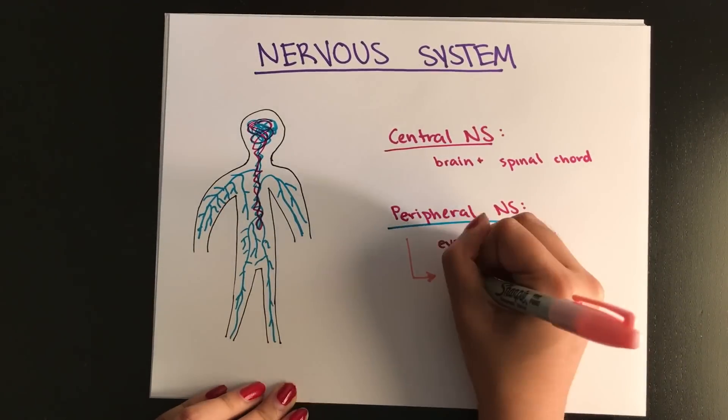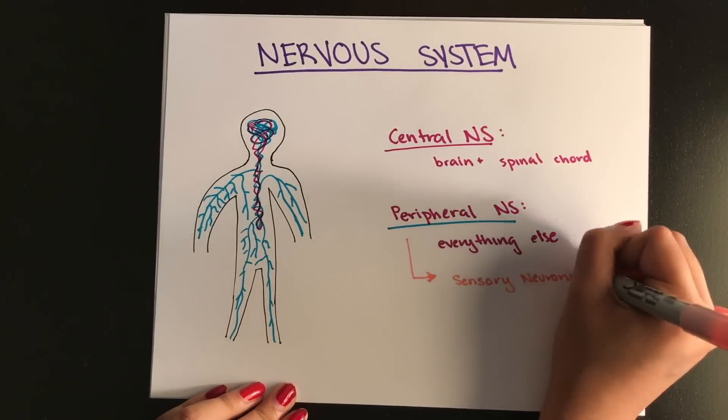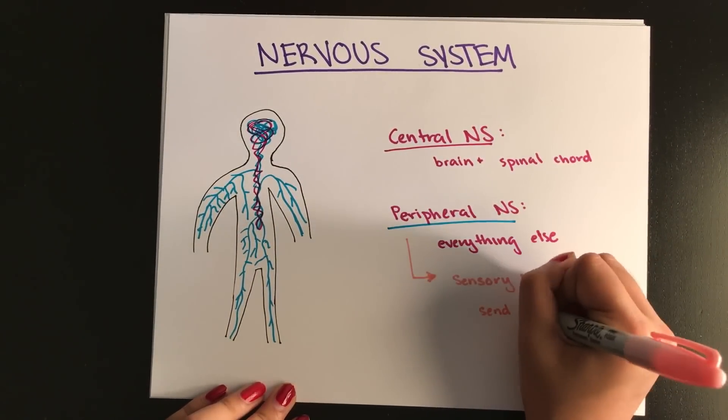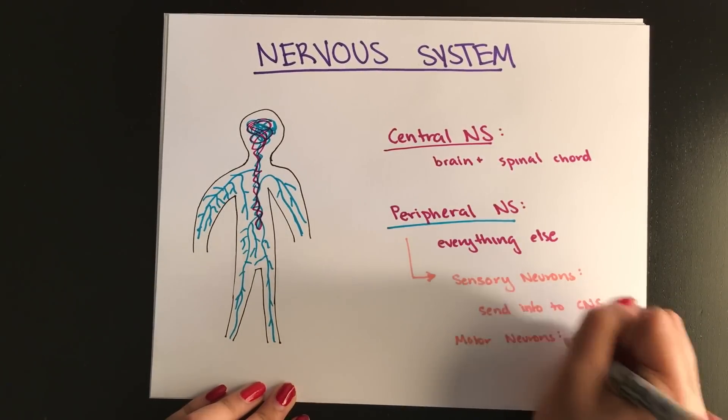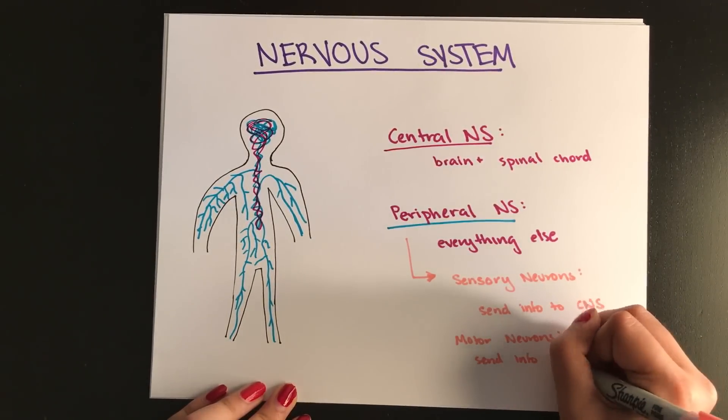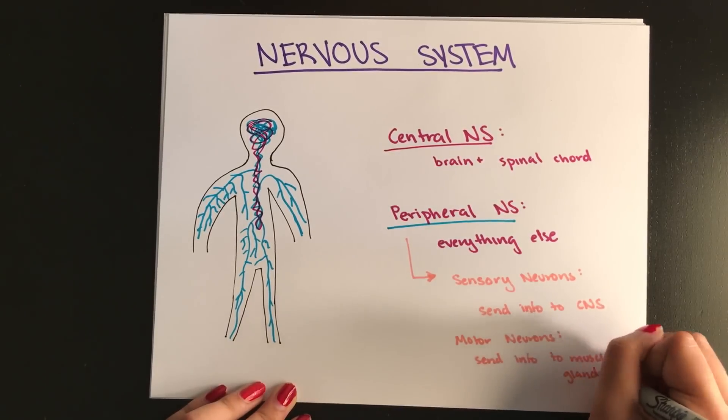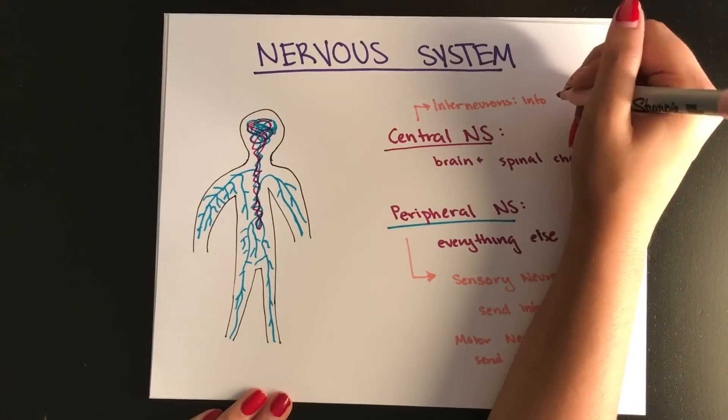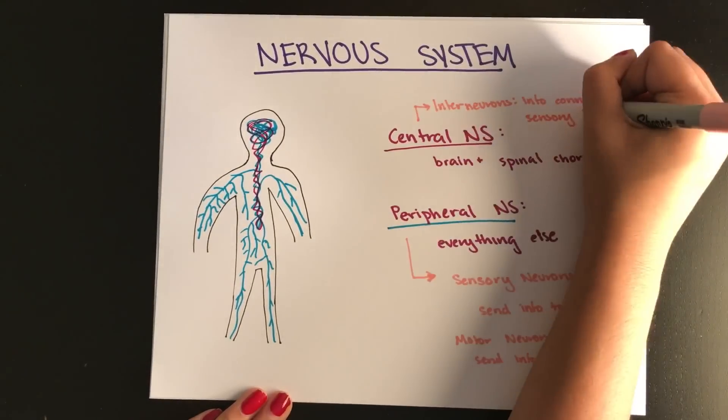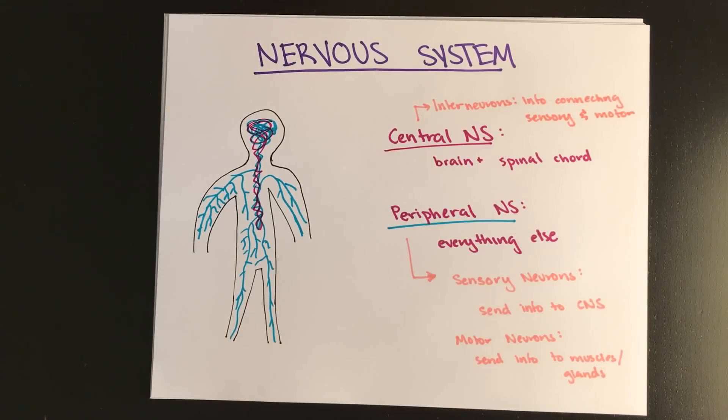Within the peripheral nervous system, sensory neurons, which send information to the central nervous system from the sensory organs, and it also contains motor neurons, which send information from the brain and the spinal cord to the muscles and glands. Now, in the central nervous system, they only work with interneurons, not the sensory or the motor. And interneurons basically just connect the sensory and the motor together.